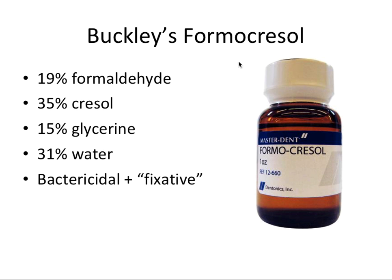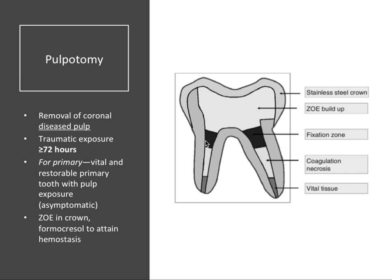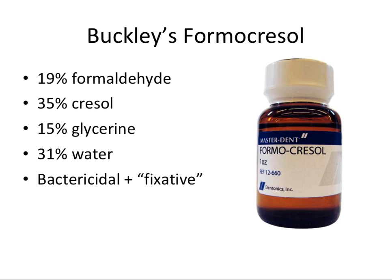Buckley's formocresol is the specific formocresol used for those pulpotomies. It contains 19% formaldehyde and 35% tricresol — hence the name formocresol — plus 15% glycerin with a water base. Formocresol is both a bactericidal agent and a fixative: it devitalizes the pulp tissue in the fixation zone and makes it resistant to enzymatic breakdown. It's been used for many years but remains controversial because it's toxic; however, if used in the correct dilution for no longer than necessary, the risk of mutagenesis or cancer is inconsequential.